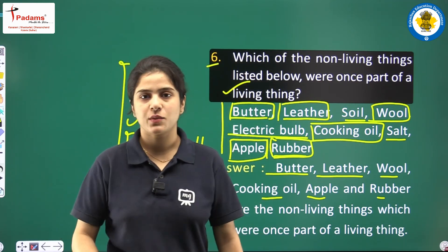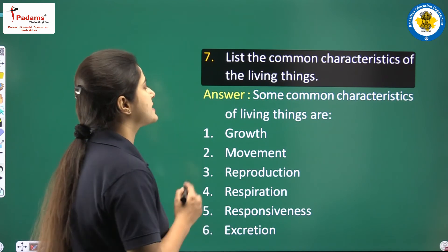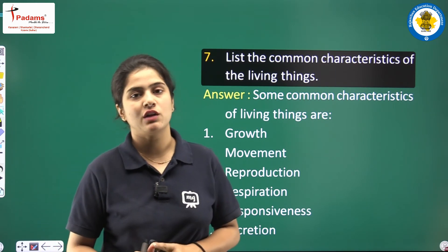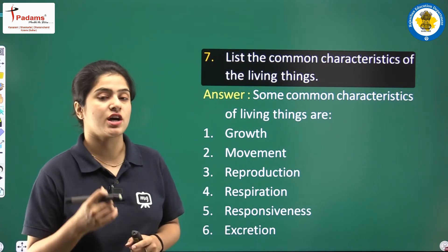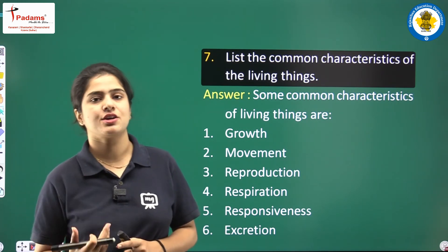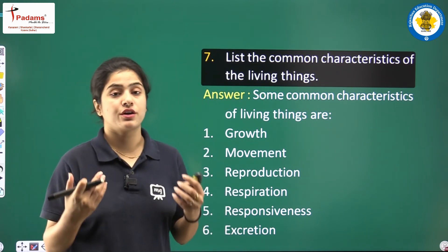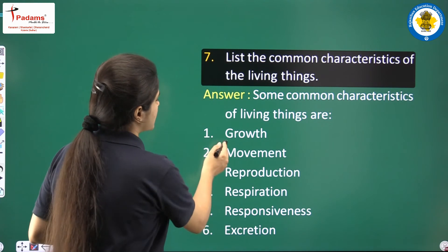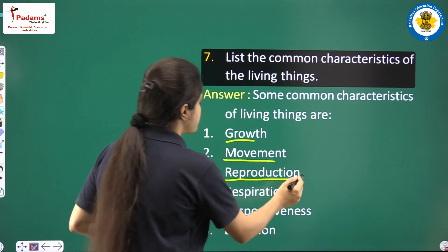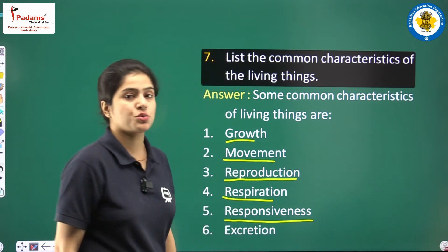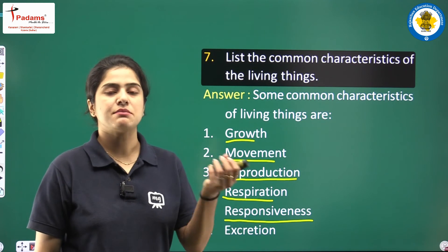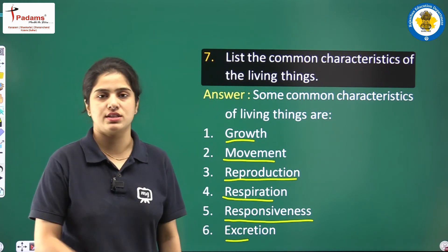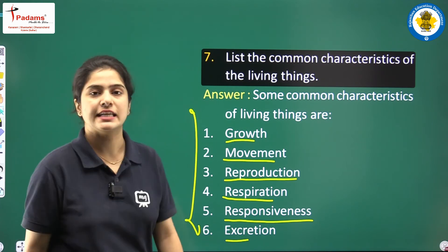This is question number six. Looking at question seven: list the common characteristics of living things. Living things show growth, excretion, respiration, reproduction, and they respond to stimuli. So the characteristics are: they show growth, they show movement, they reproduce, they have respiration, they have responsiveness towards stimuli, and they excrete their waste products from their body. These are the common characteristics of living things.